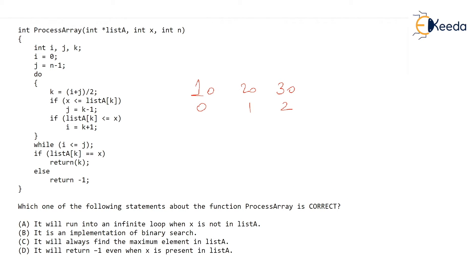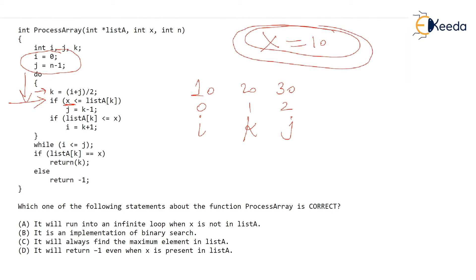We land in the do-while loop where k is the midpoint, so k is at 1. Let's take x as 10 — which is present in the array. We check the first if: is x less than or equal to list a[k]? The kth element is 20. Is 10 less than or equal to 20? That is true. Hence j becomes equal to k minus 1, so j becomes 0. There is no else here — the second if will also be checked: is list a[k] less than or equal to x? Is 20 less than or equal to 10? That is false, so i is not going to move anywhere.